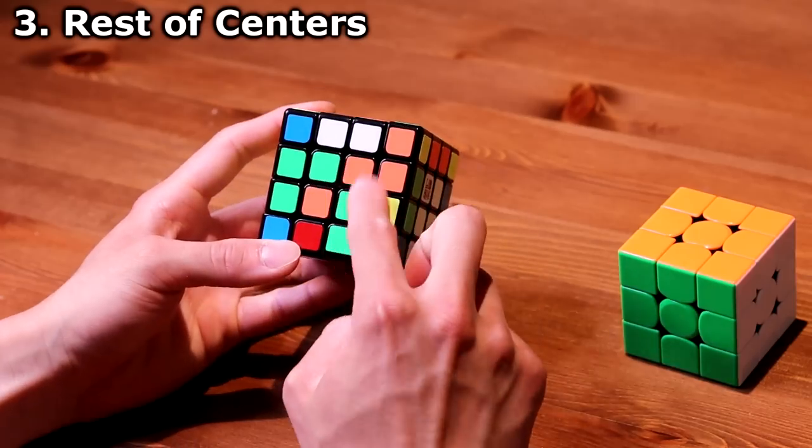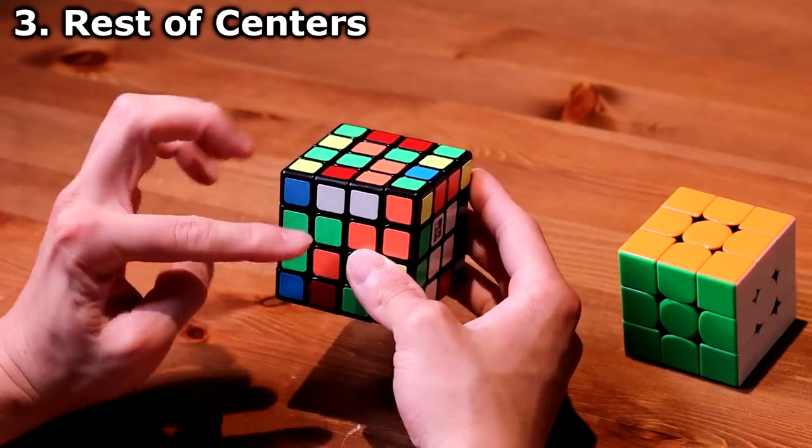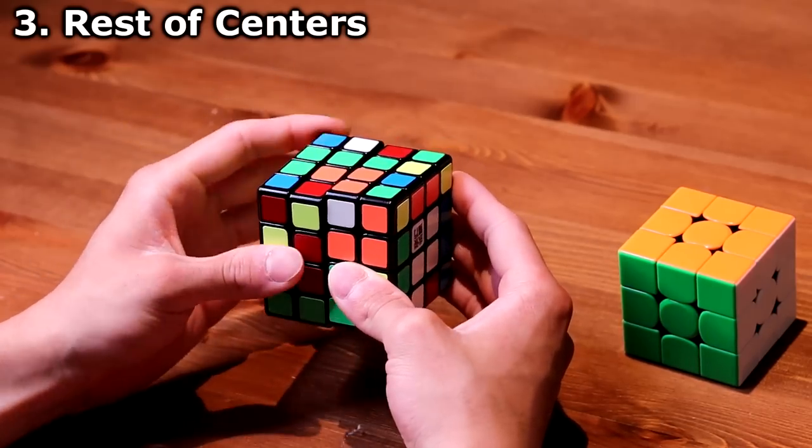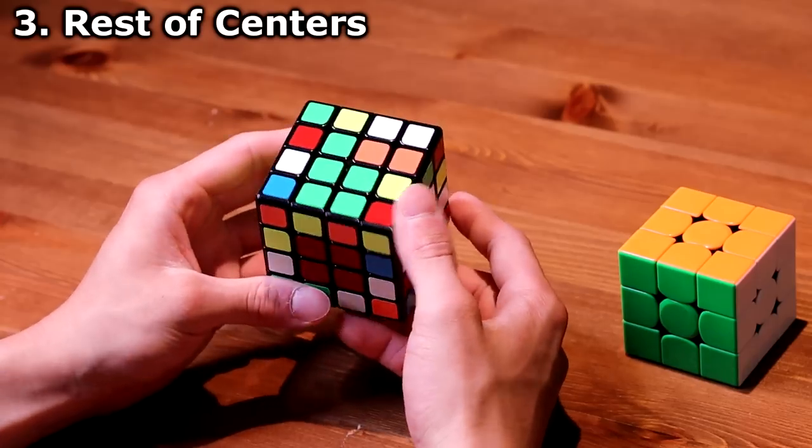In one scenario, there could be diagonal. What I can do is move the green piece up, turn the top layer, and then put it back down.